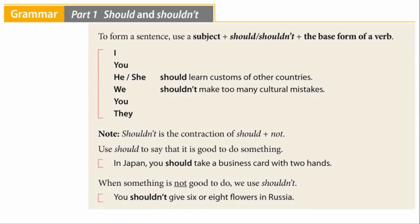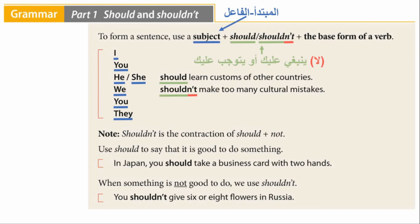To form a sentence, use a subject plus should or shouldn't, plus the base form of a verb. For example: we should learn customs of other countries. Or: you shouldn't make too many cultural mistakes.